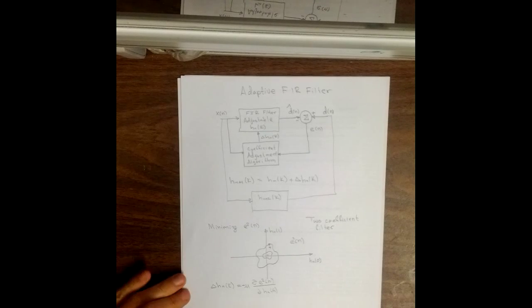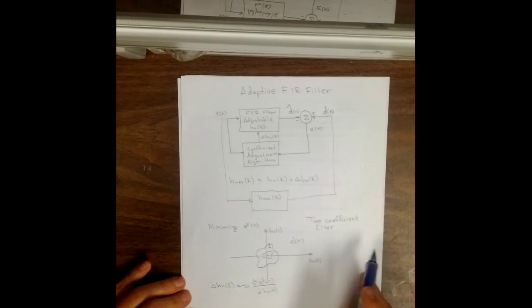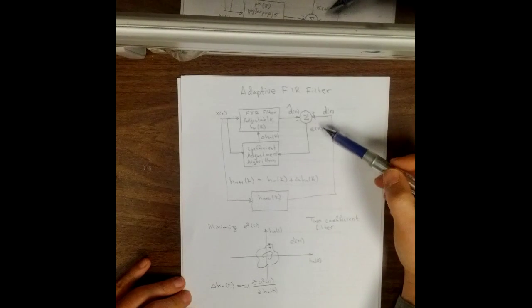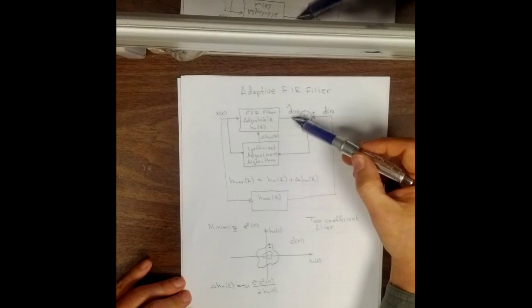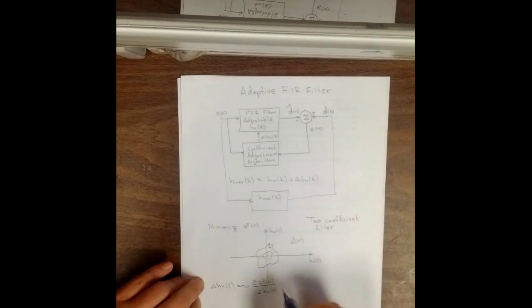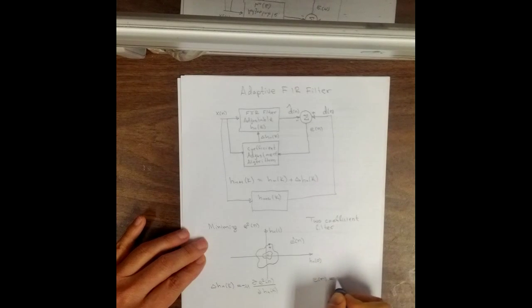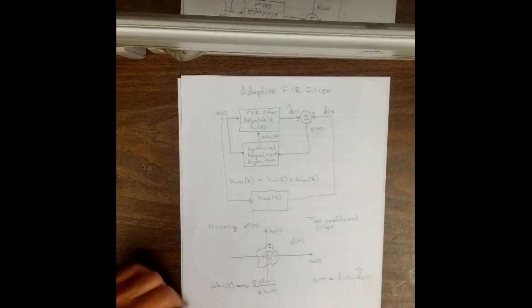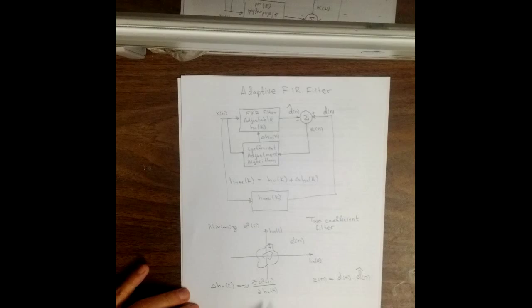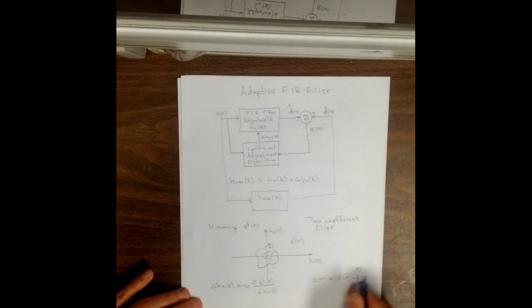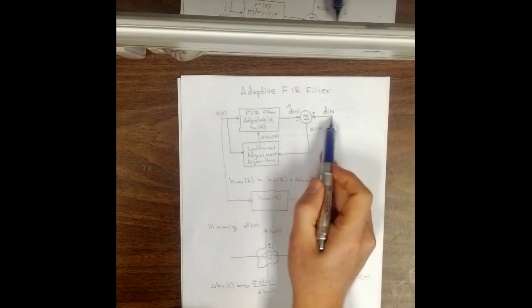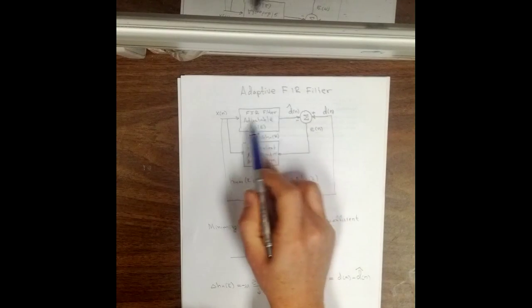So now the question becomes, what is the e squared of n? And how does it relate to the h sub n of k? Well, if you look at our picture up here, you will see that e of n is the difference between d of n and d hat of n. So let me write over here, e of n equals d of n minus d hat of n. And so now what we'd like to do is we'd like to try and figure out what is d hat of n in terms of the h sub n of k. Because you see d of n doesn't depend on the h sub n of k, it's only d hat here.